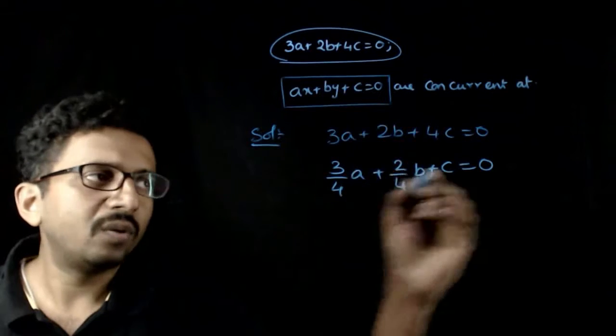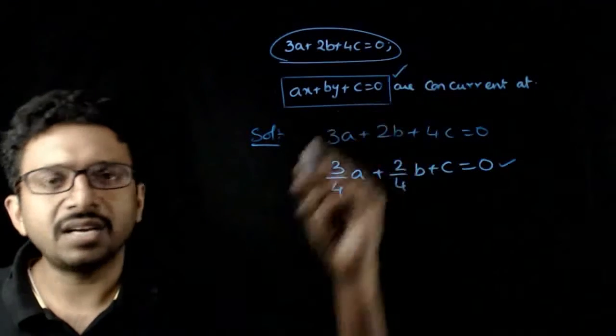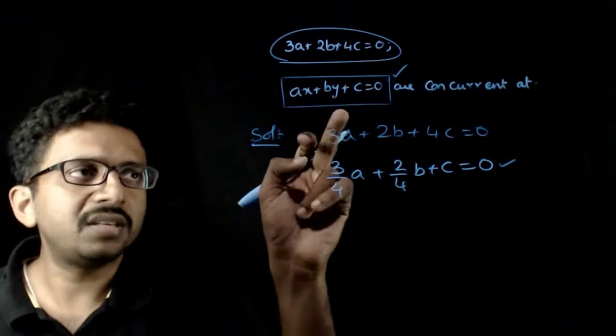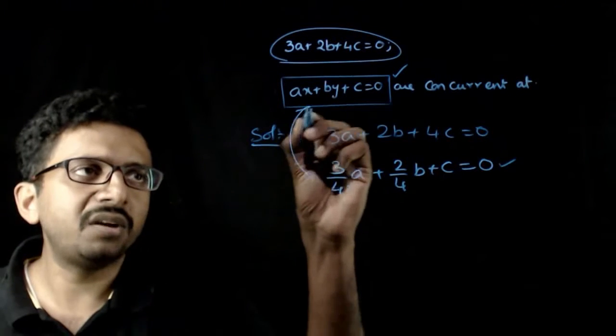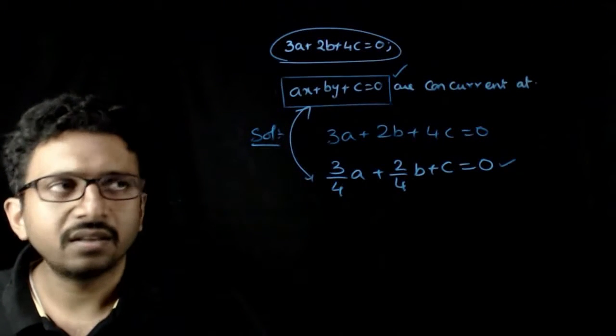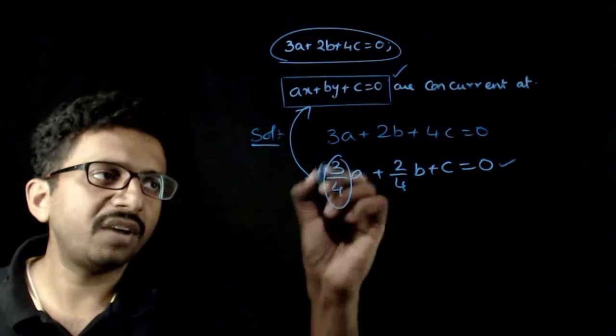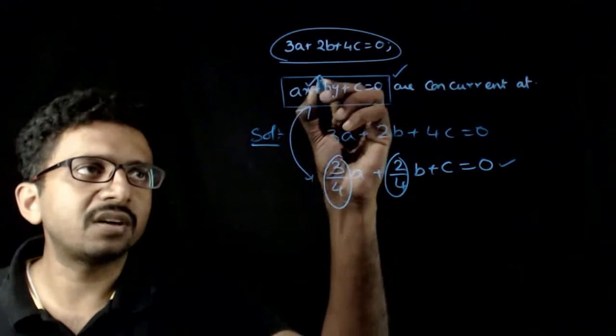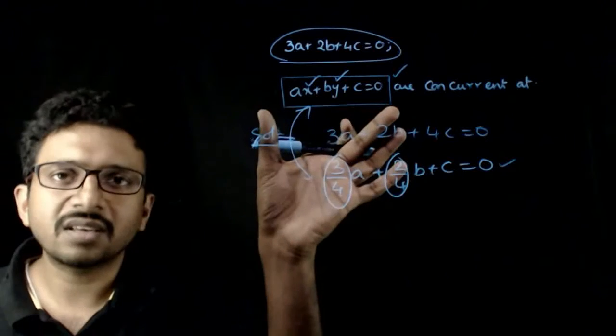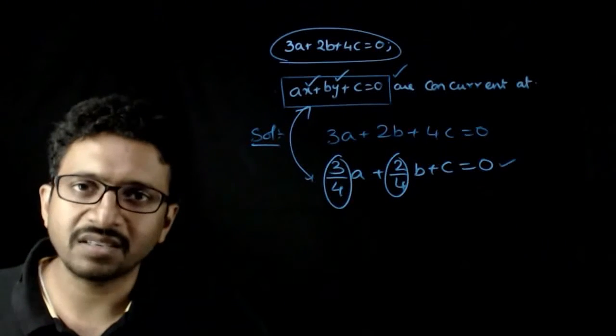If you see these conditions combined, what is the meaning of this condition with respect to this line? The meaning is that if you substitute 3/4 and 2/4 in place of x and y, this equation is always satisfied.